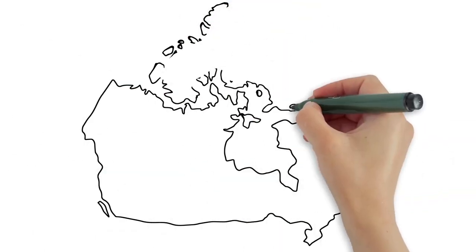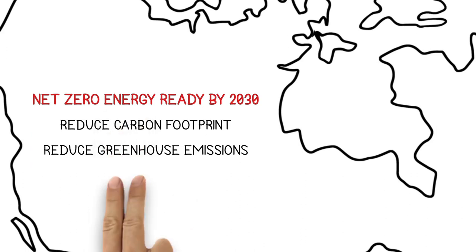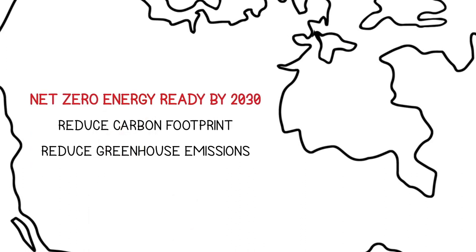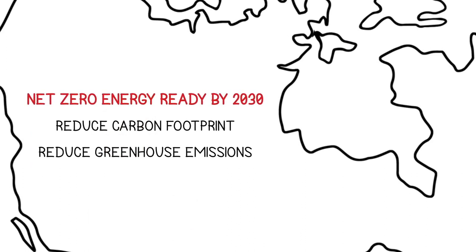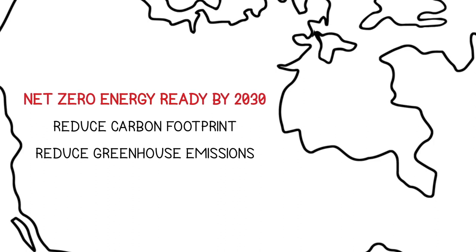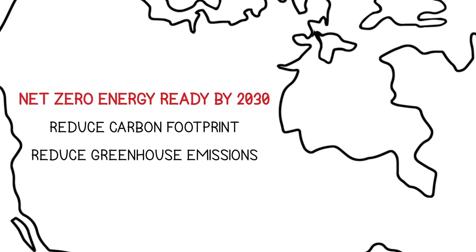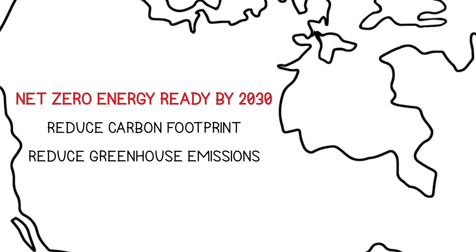Canada's Climate Leadership Plan sets the goal that all new construction will be net-zero energy ready by 2030. This means reducing the Canadian carbon footprint by reducing greenhouse emissions. It's about leaving our country in better shape than when we got it.